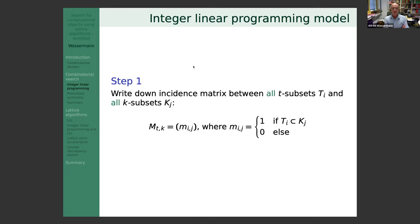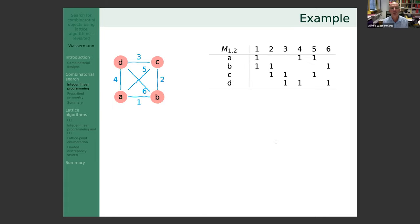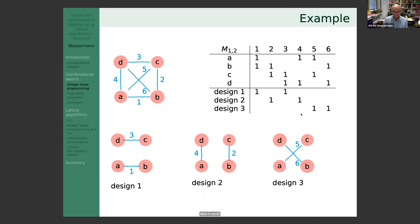The first step in the second approach is to write the incidence matrix MTK between all t-subsets and all k-subsets. We put a 1 if a t-subset is contained in a k-subset, otherwise 0. In our toy example: a is contained in edges 1, 4, and 5; b is in edges 1, 2, 6; and so forth.